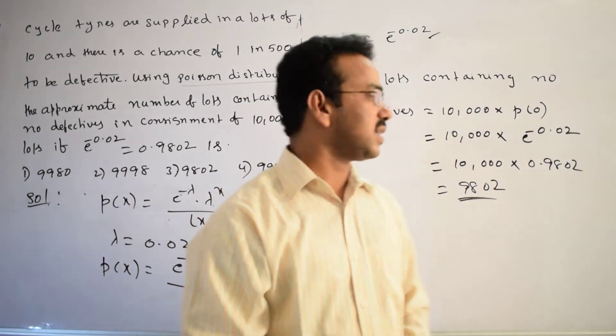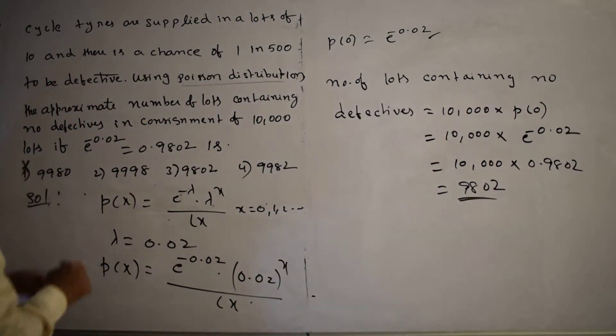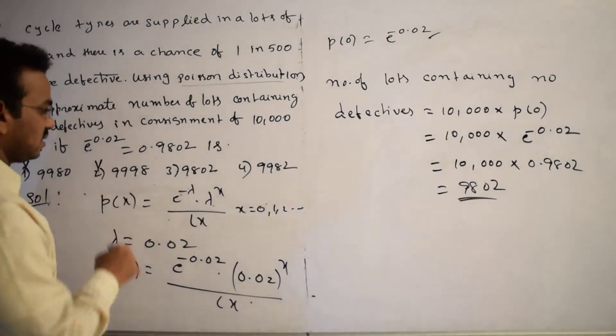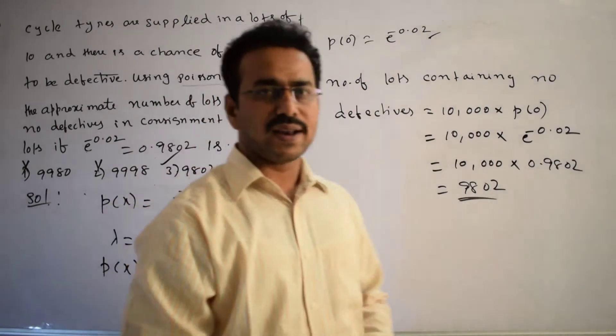Now, let us compare with the given options. What are the given options here? First option is 9980. This is incorrect. Second option is 9999. This is also incorrect. Third is 980. This is the correct one. So this is the final conclusion.